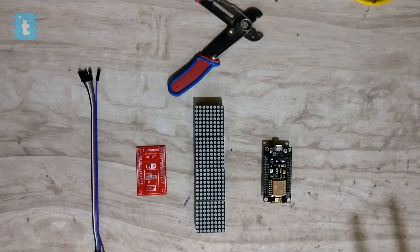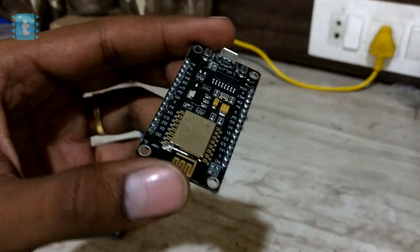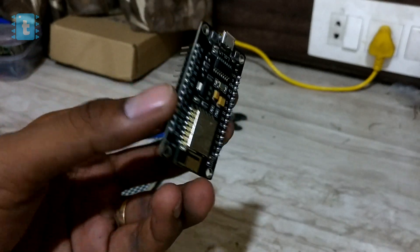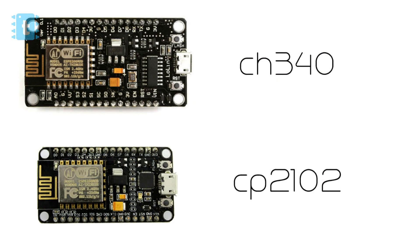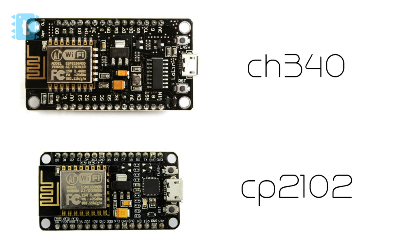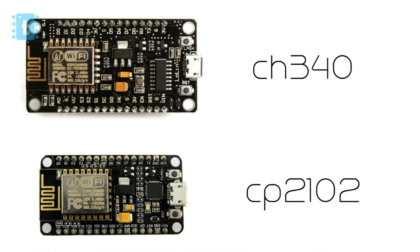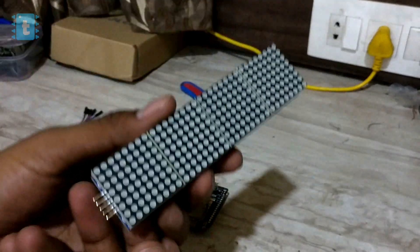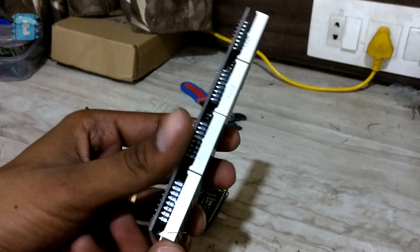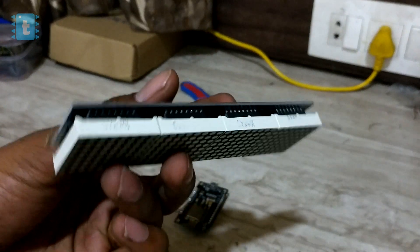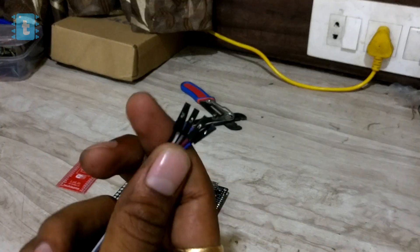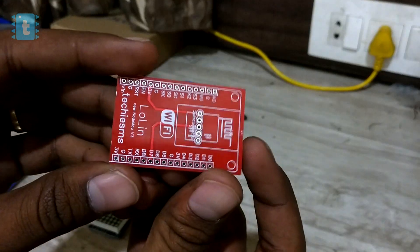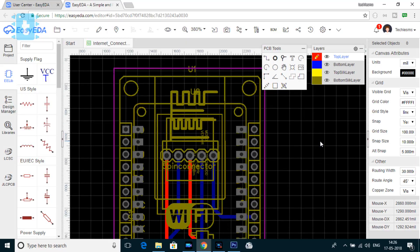For making this project you require one ESP8266 development board or a NodeMCU board. This time I have used a board with the CH340 driver IC, which is a bit different from what I used earlier, but no worries — this project will work with both NodeMCU boards. I also used this matrix display ordered from Amazon, whose link is in the description, along with female-to-female connector wires.